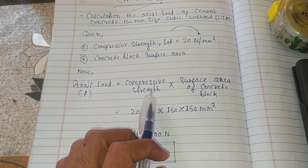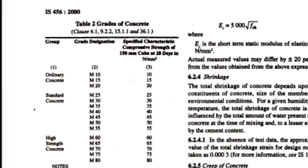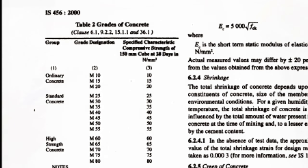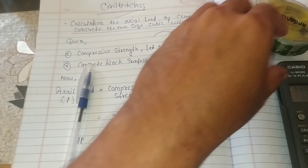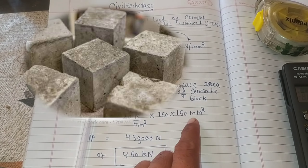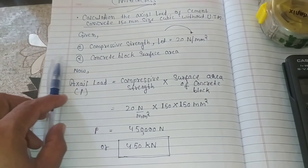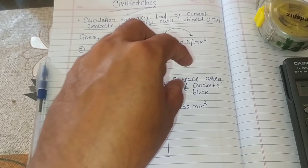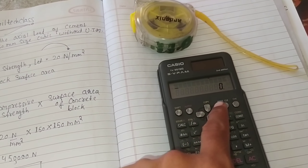There are various types of concrete grades — ordinary, standard, and design — according to IS code. Now putting in the values: surface area is 150 × 150 mm square, and compressive strength is 20 Newton per mm square. Using these two values we can calculate the actual load P.